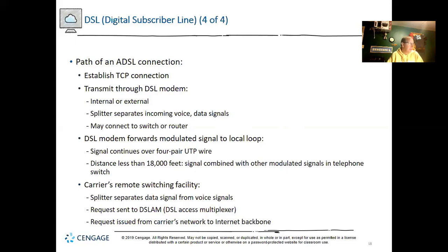Inside the carrier's remote switching facility, a splitter separates data from voice. Your request is then sent to a DSLAM — a DSL access multiplexer — which aggregates multiple DSL connections to the driver line connecting to the carrier's office. Finally, your request is issued from the carrier's network to the internet backbone, travels across the internet to the destination web server, and everything happens in reverse on the way back.